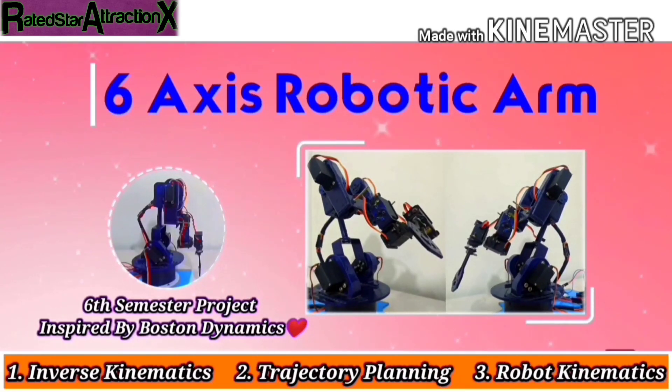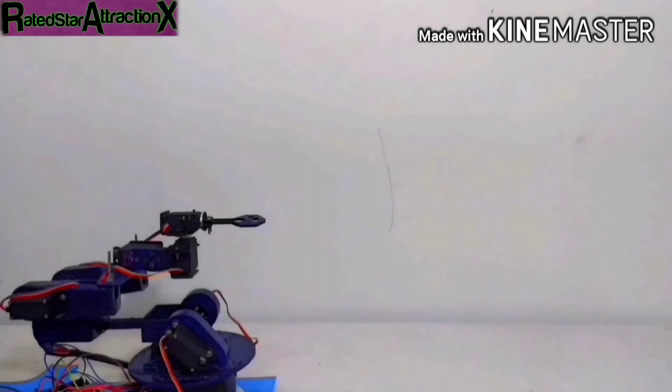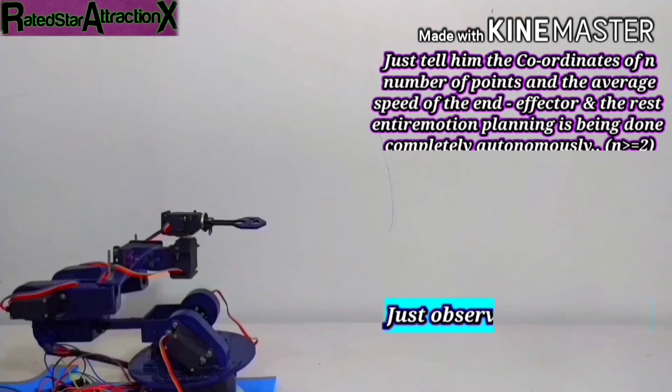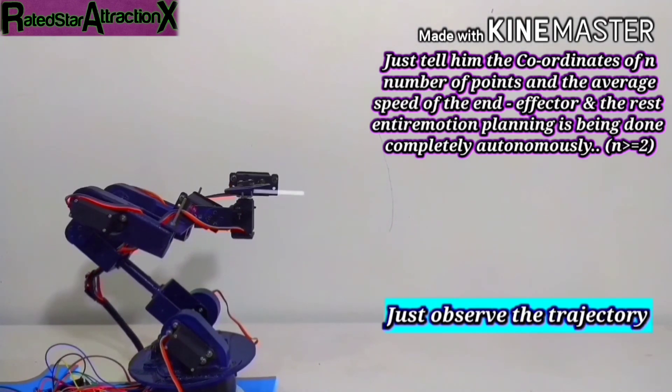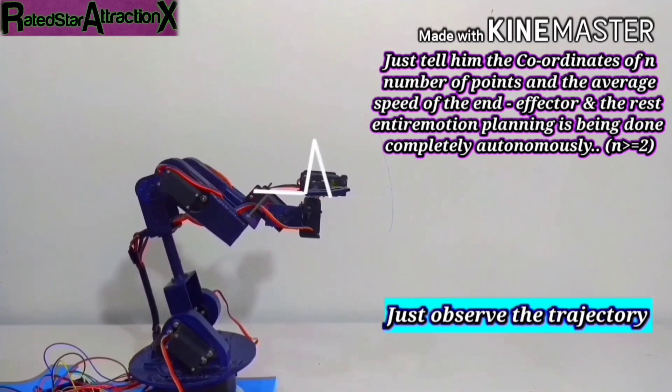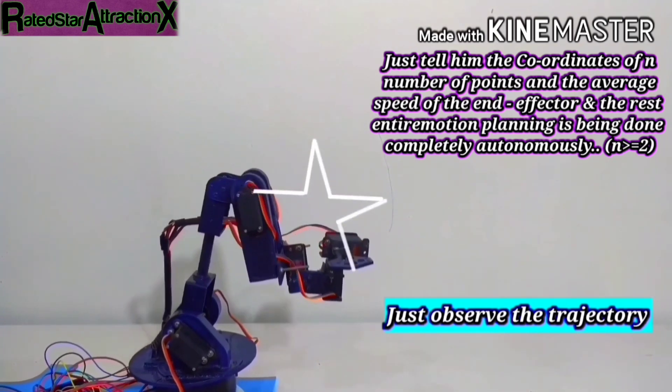Hey, this is Akarshan and finally I am back with another exciting story. This time it's all about the motion planning of a six axis robotic arm. Just observe how beautifully the end effector of this robotic arm follows a star kind of trajectory in space.